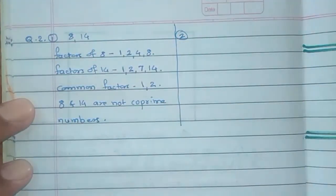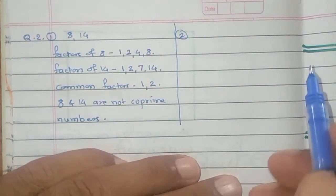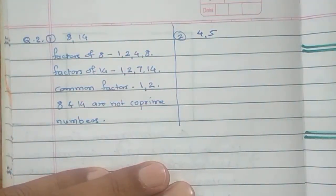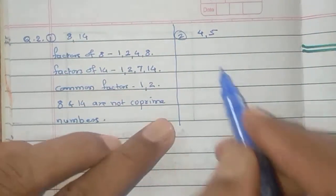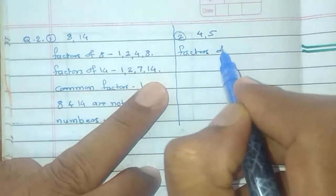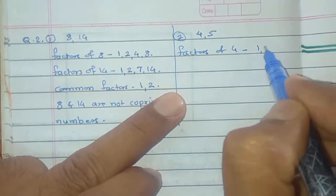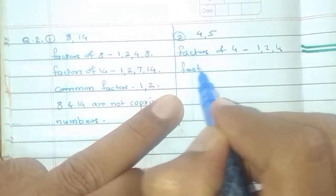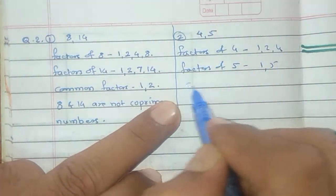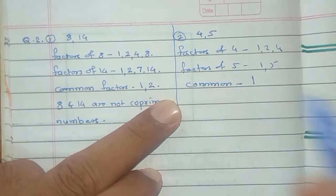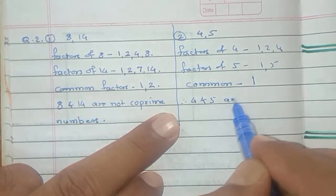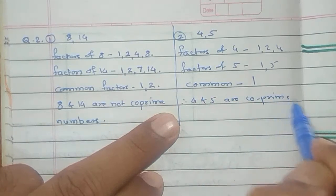Second example: 4 and 5. These are consecutive natural numbers. Factors of 4 are 1, 2, 4. Factors of 5 are 1 and 5. Common factor is only 1. Therefore, 4 and 5 are co-prime numbers.